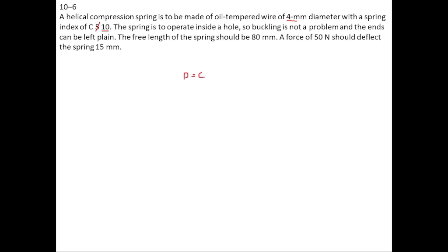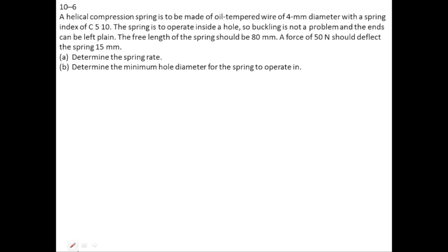Since C and wire diameter D are given, and C equals mean diameter divided by wire diameter, the mean coil diameter is C times D, which is 10 times 4 mm, giving 40 mm. First we find the spring rate k, which we have calculated. Then we need to find the hole diameter in which the spring is operating; the hole diameter should be equal to or greater than the outside diameter of the spring.